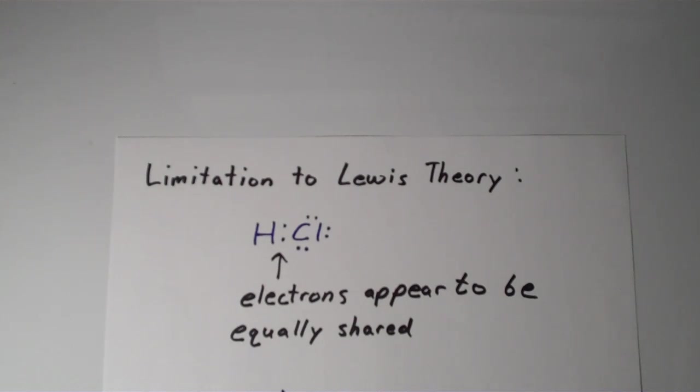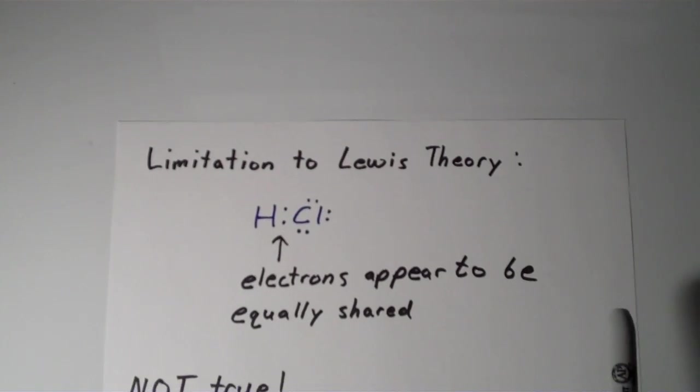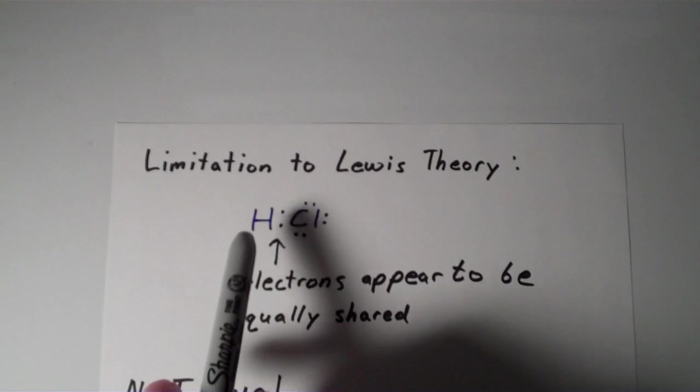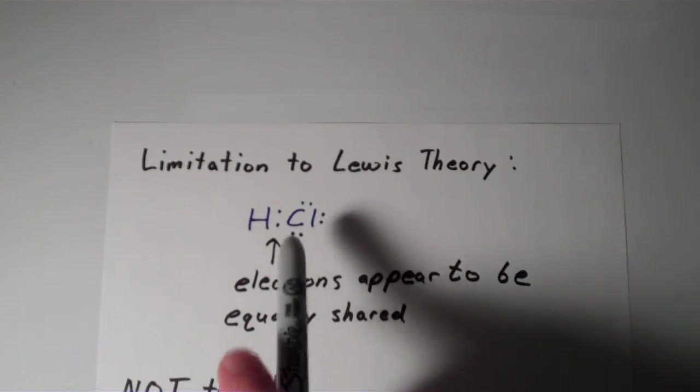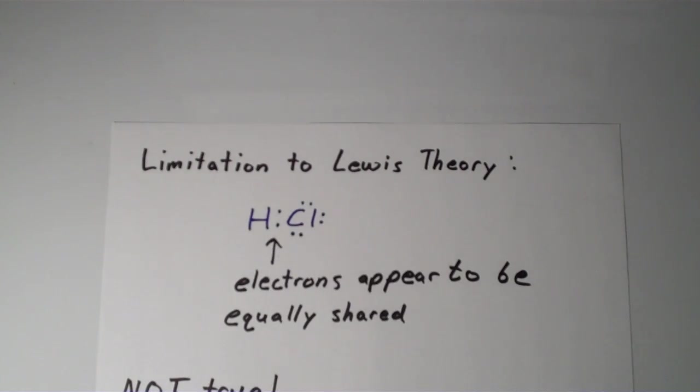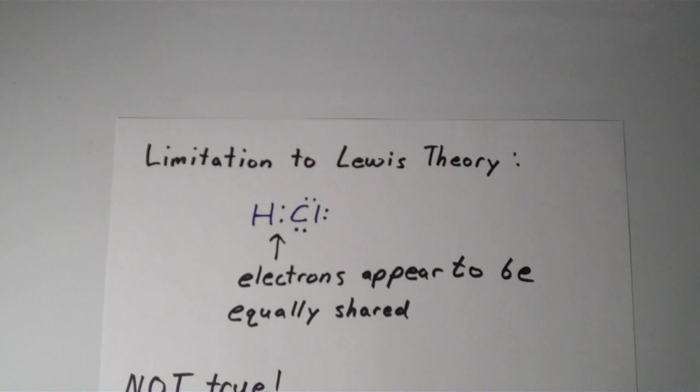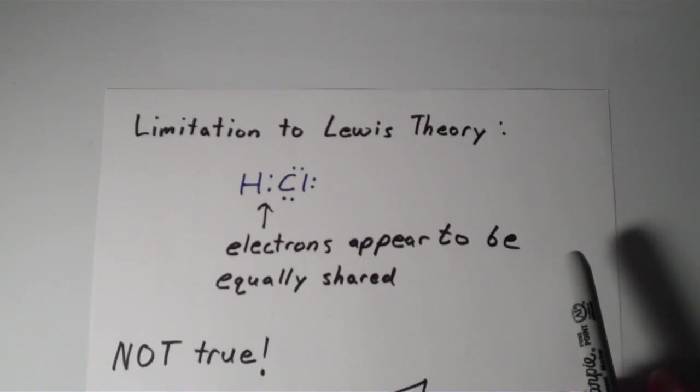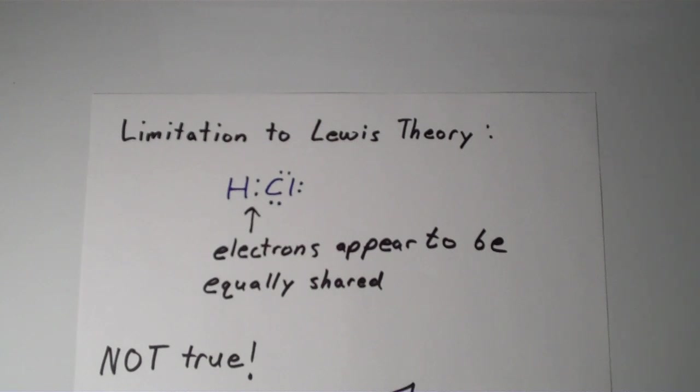One of the main limitations to Lewis theory is that when we represent electrons with dots, take HCl for instance, hydrogen chloride. The electrons that are shared between the hydrogen and the chlorine, when we represent them as dots as shown here, the electrons appear to be equally shared between these two atoms. And it turns out that's not true in the case of HCl.